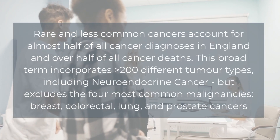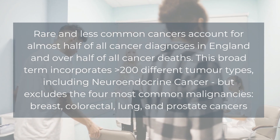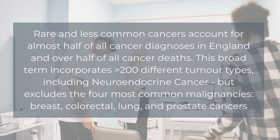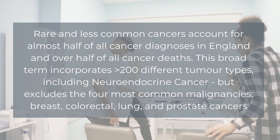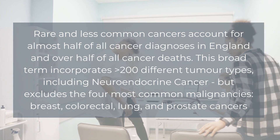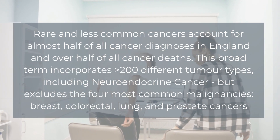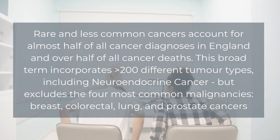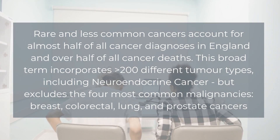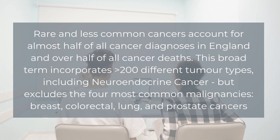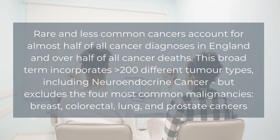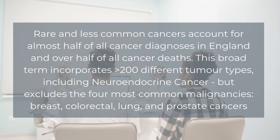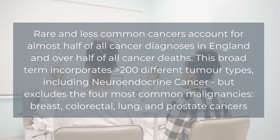Rare and less common cancers account for almost half of all cancer diagnoses in England and over half of all cancer deaths. This broad term incorporates more than 200 different tumour types, including neuroendocrine cancer, but excludes the four most common malignancies: breast, colorectal, lung, and prostate cancers.